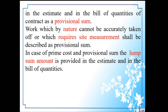In the case of prime cost and provisional sum, a lump sum amount is provided in the estimate and in the bill of quantities. So this is about prime cost and provisional sum.